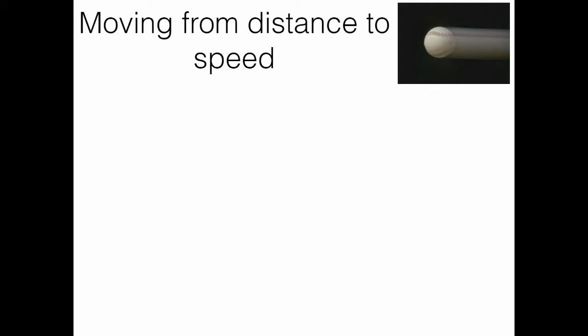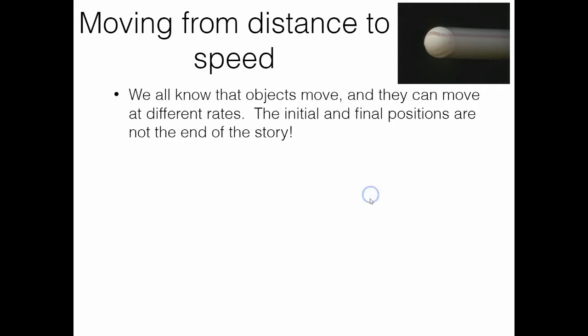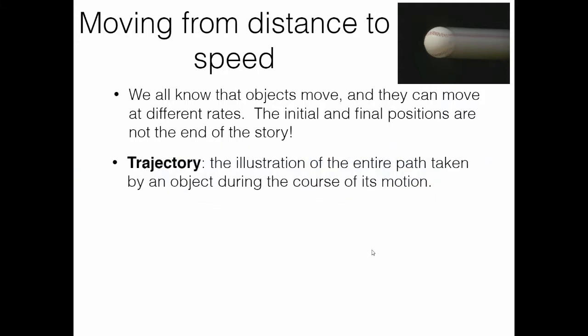In order to transition from my first lesson to my second lesson, we've got to think about moving from distance to speed. We all know that objects move, and the initial point and the final point at which they exist is not the end of the story, because we've got to look at how fast they move, or what their rate of motion is. We're also going to look at if that motion rate changes over the course of the trajectory. Trajectory is, in the most basic terms, the illustration of a path taken by an object during the course of its entire motion.